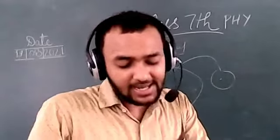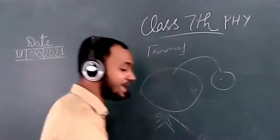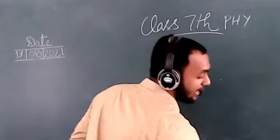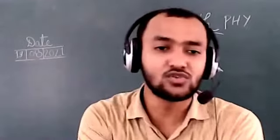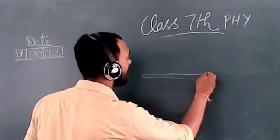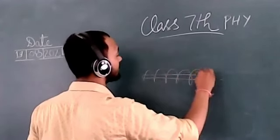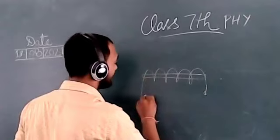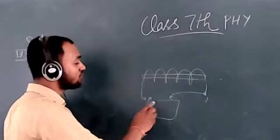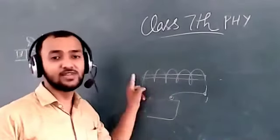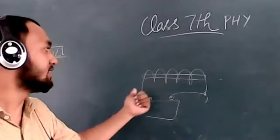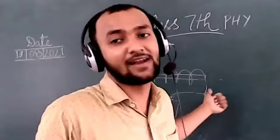Electrical energy is converted into magnetic energy — I have explained the concept of the electromagnet. Most students have tried to make an electromagnet using a needle: you wind a wire around the needle and connect it to a battery. When you switch on the battery, the needle behaves as a magnet. So electrical energy is converted into magnetic energy — this is called an electromagnet.